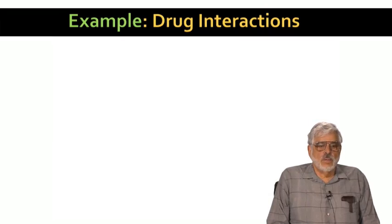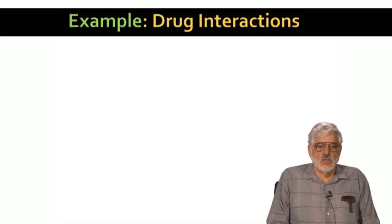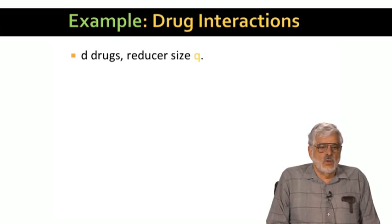Now, I want to apply the mapping schema idea to the problem of drug interactions, and get a lower bound on replication rate as a function of the reducer size Q. As we shall see, the algorithm we already suggested for the problem is almost as good as possible. We'll again assume that there are D drugs to compare, and the limit on the reducer size is Q.